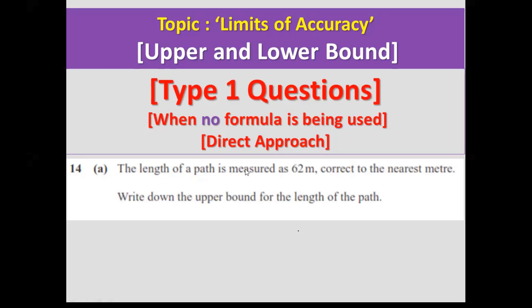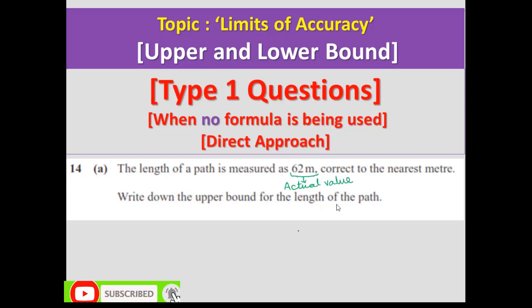The length of a path is measured as 62 meters correct to the nearest meter. Write down the upper bound for the length of the path. Before writing the upper bound, you should know where is the actual value and where is the key to find the error. 62 meters is the actual value and the nearest meter is the key for error.